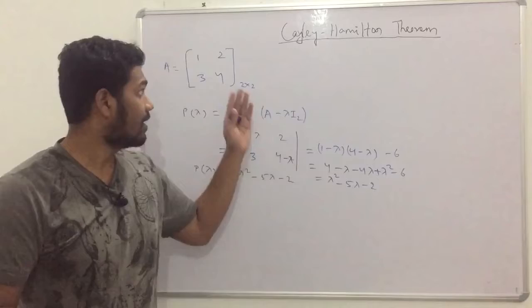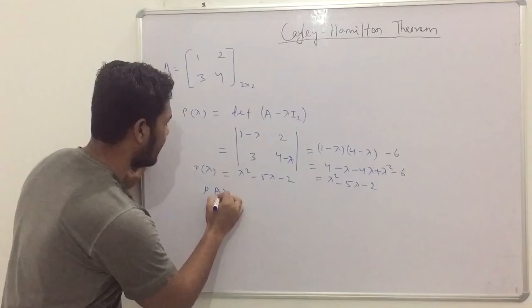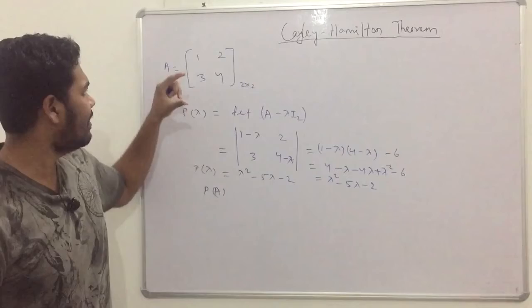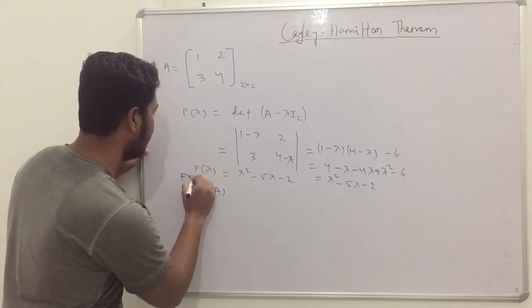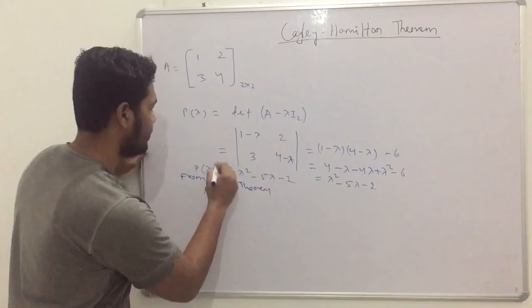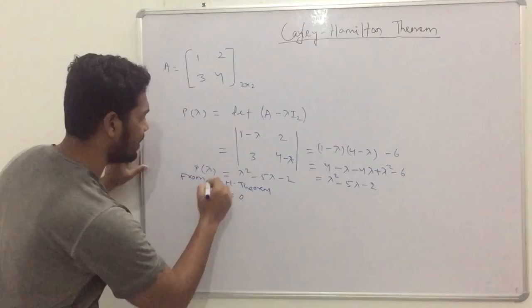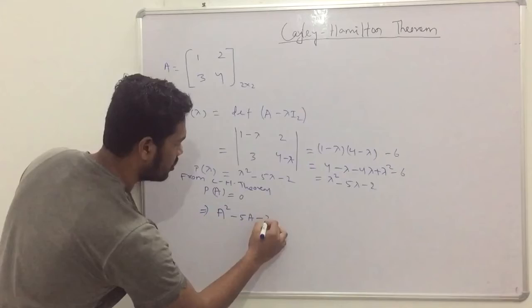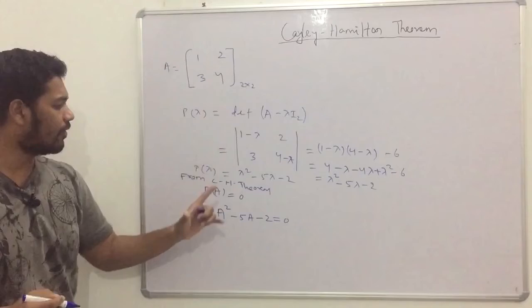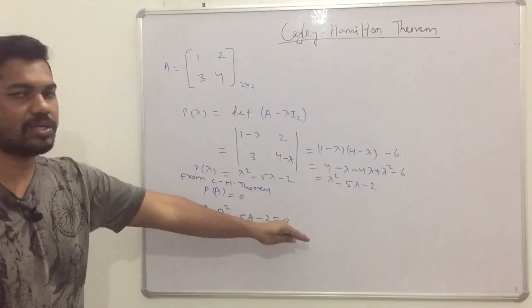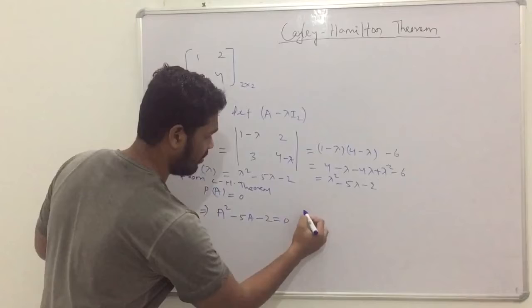From the Cayley-Hamilton theorem, we define the matrix polynomial P(A) by replacing the scalar λ with the matrix A, and this must equal the zero matrix. So from the Cayley-Hamilton theorem, P(A) = 0, which means A² − 5A − 2I₂ = 0. This is the characteristic equation for our matrix [1, 2; 3, 4]. Let's verify this gives the 2×2 zero matrix [0, 0; 0, 0].